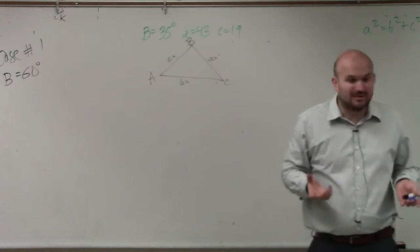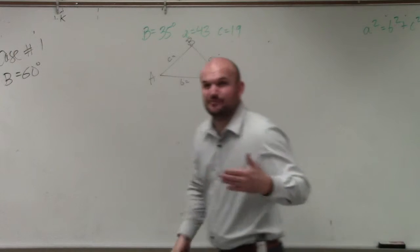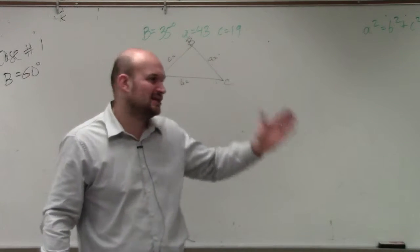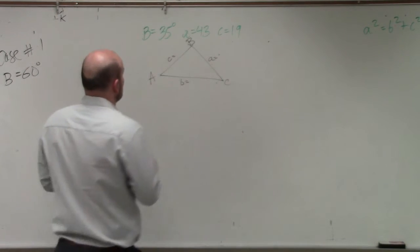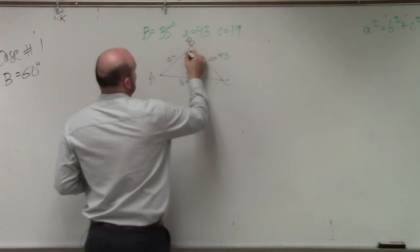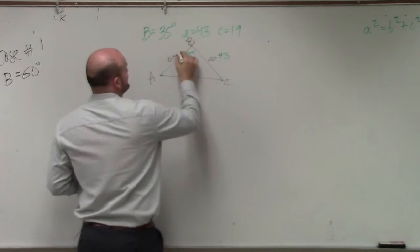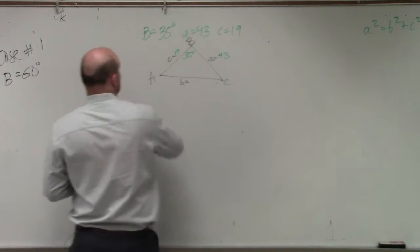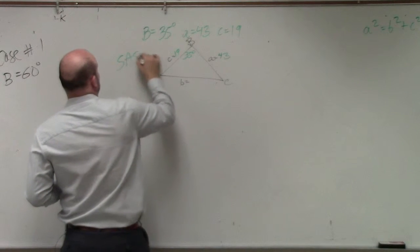Does everybody follow me? I like doing it this way because it's very easy for me to identify if it's angle-side-angle, side-side-angle, and so forth. So in this case, I have A is 43, B is 35 degrees, and C is 19. So therefore, this is an example of side-angle-side.